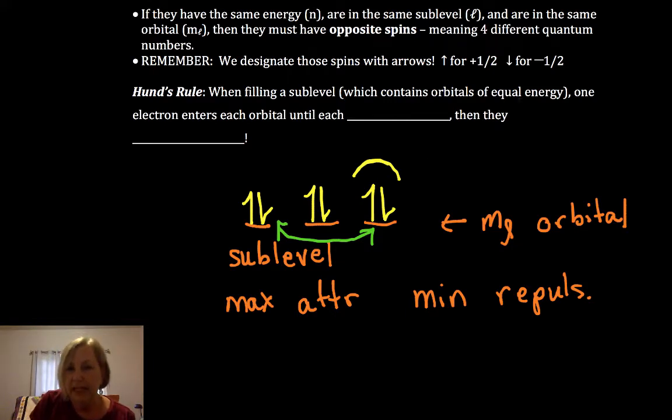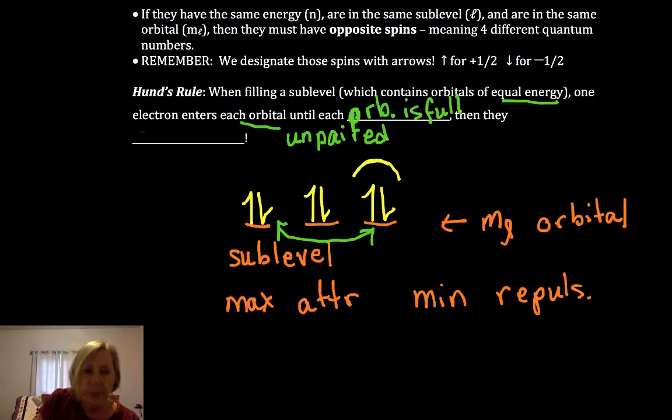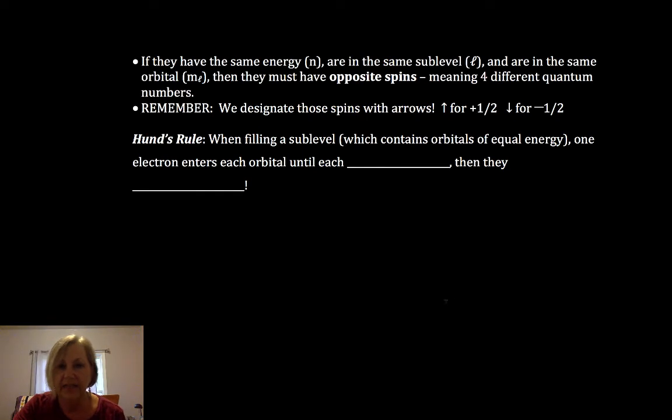So when filling a sublevel, equal energy, one enters each orbital separately. So unpaired until each is full. So we want to put them in unpaired until each orbital is full and then we pair them up. Okay, so that's Hund's rule. So let's see how that goes in our next video.